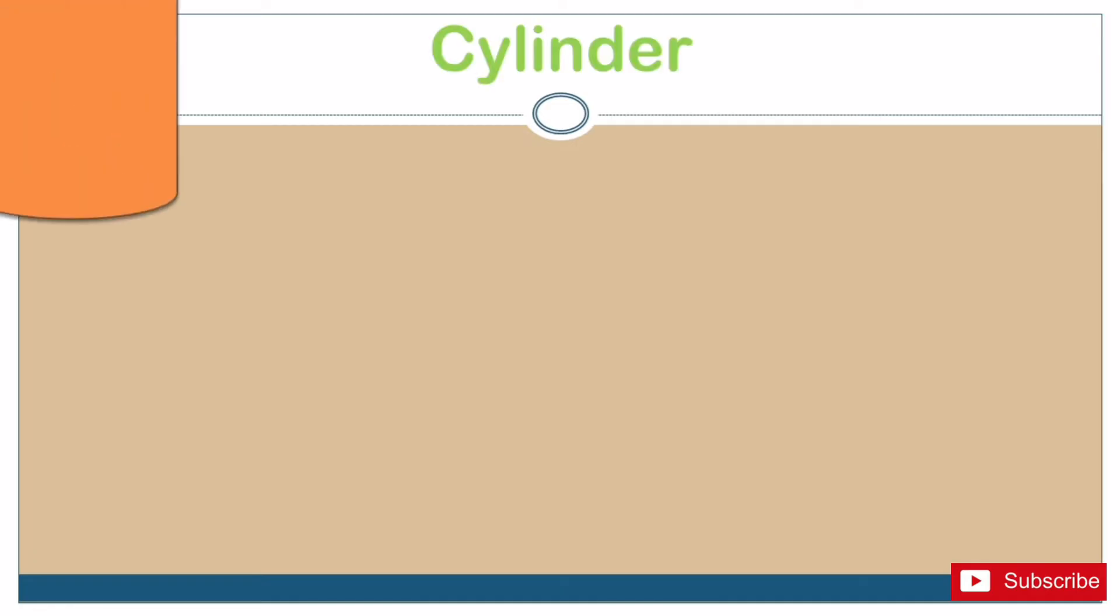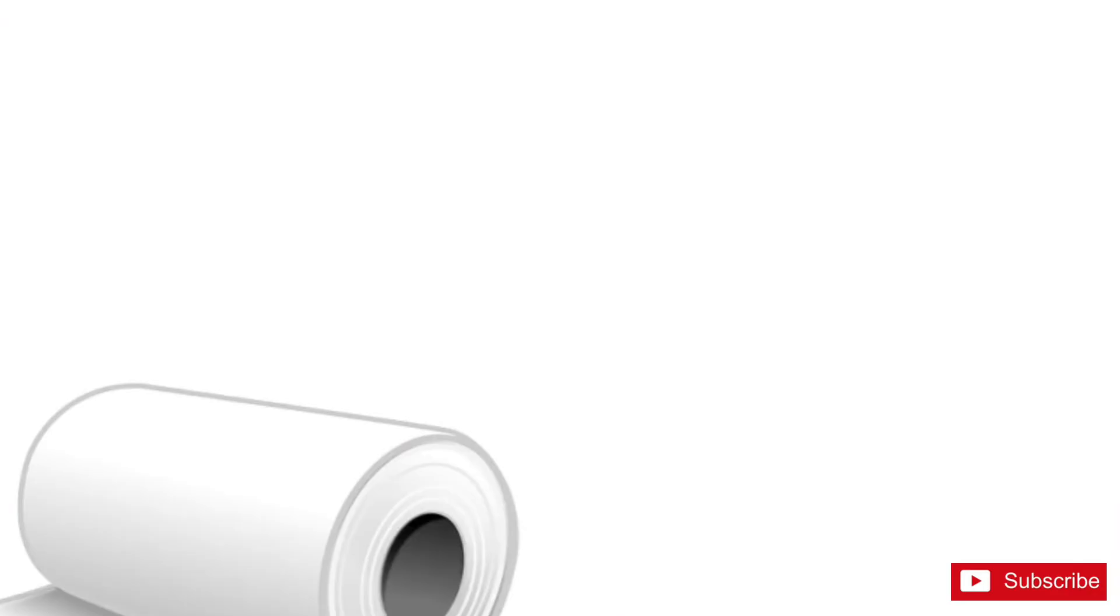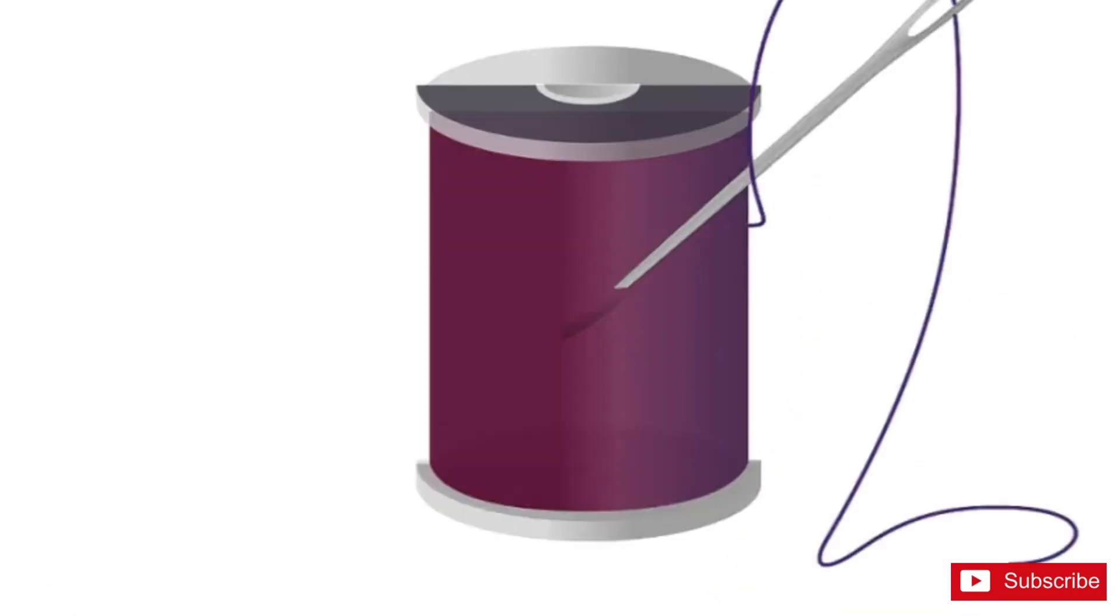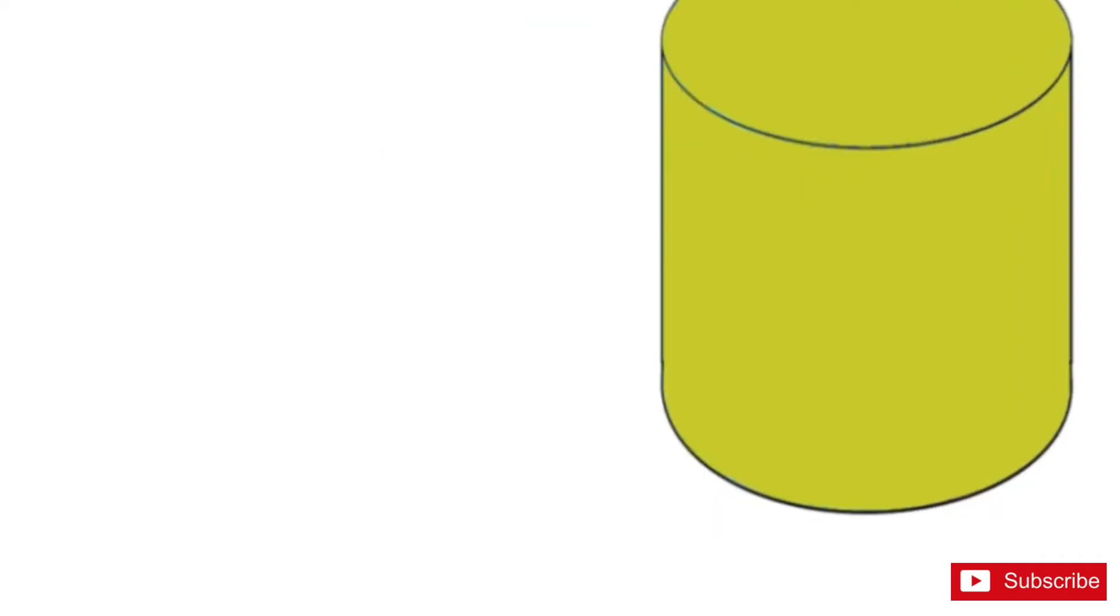This is a cylinder. A cylinder has three faces, two flat faces and one curved face. It also has two edges. Let's look at some objects that are cylinders. Cylinders can roll on its curved face, it can stand on its flat faces.